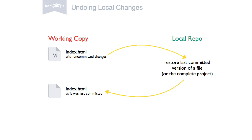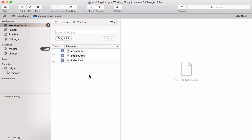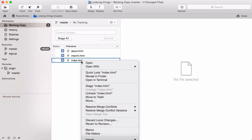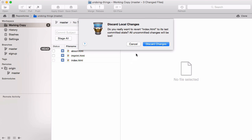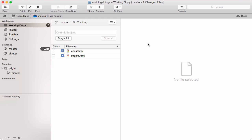Tower also allows you to undo uncommitted local changes. Sometimes you realize that the changes you just made aren't worth keeping and you'd like to restore the last committed state of a file and start fresh. Let's do this with our index.html file — simply right-click the file and select Discard Local Changes. This discards any uncommitted changes made since the last commit, and you see that it's not listed as modified anymore.